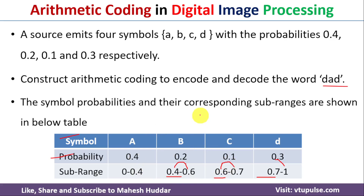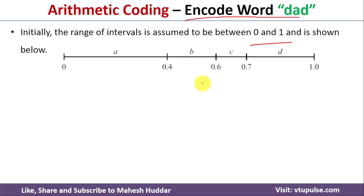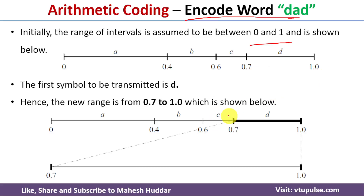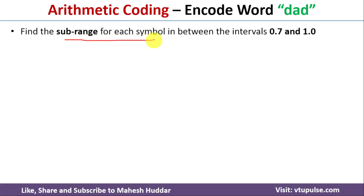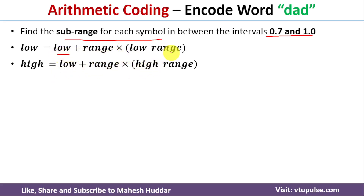Once we find the sub-range for each symbol, we need to encode the word DAD. To encode the word, we initially assume the range between 0 to 1. In DAD, the first symbol is D, which lies between the interval 0.7 and 1. We need to find the sub-range for each symbol within the interval 0.7 and 1, using the formula: low = low + range × low_range; high = low + range × high_range. Here low is 0.7 and range is 1 − 0.7 = 0.3.